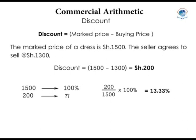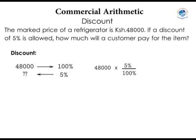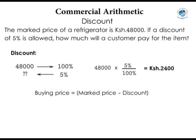Another example: the marked price of a refrigerator is 48,000 shillings. If a discount of 5% is allowed, how much will a customer pay? The discount = (5/100) × 48,000 = 2,400 shillings. So the buying price = 48,000 − 2,400 = 45,600 shillings.